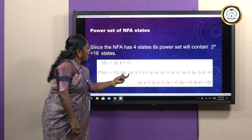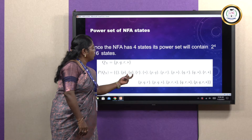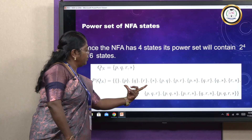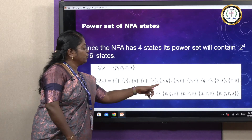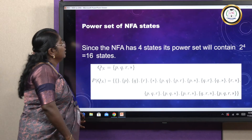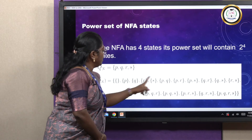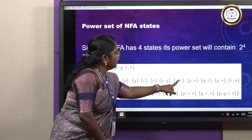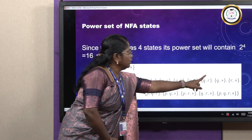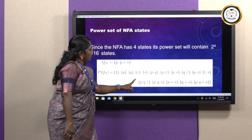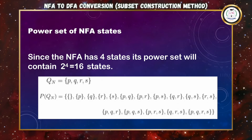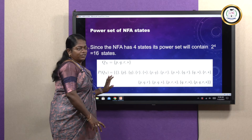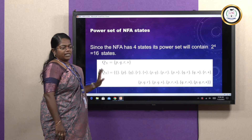From the 4 states P, Q, R, S we construct subsets. First we take the null set, then the 4 individual states. Then combinations: PQ, PR, PS, QR, QS, RS — then three-element sets: PQR, PQS, PRS, QRS — and finally the full set PQRS. In total we have constructed 16 different states. Using these 16 states we will construct a DFA transition table.